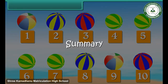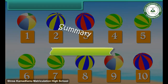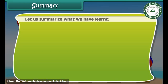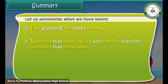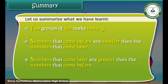Summary. Let us summarize what we have learnt: two groups of 10 make 20; numbers that come before are smaller than the numbers that come later; numbers that come later are greater than the numbers that come before.